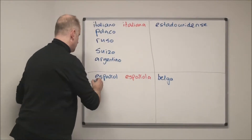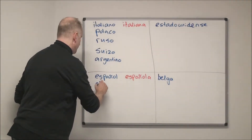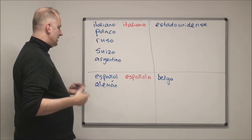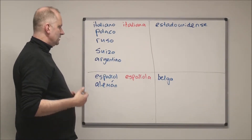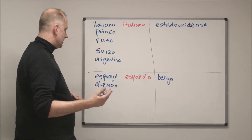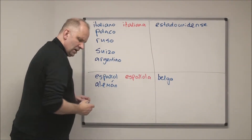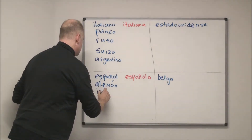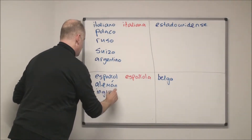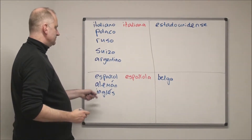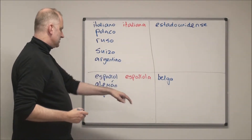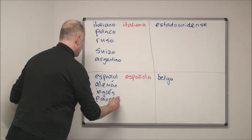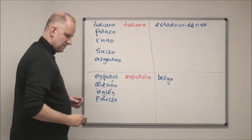Other adjectives that end with a consonant include 'alemán' for a German man, and 'alemana' for a female. You've also got ones which end in -és, so for example 'inglés/inglesa' and 'français/francesa'.